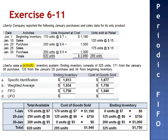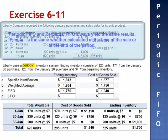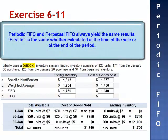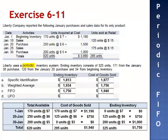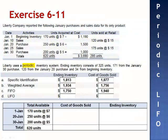If these numbers look familiar, there's a good reason. Periodic FIFO and perpetual FIFO always yield the same results, because we're removing the items in chronological order.